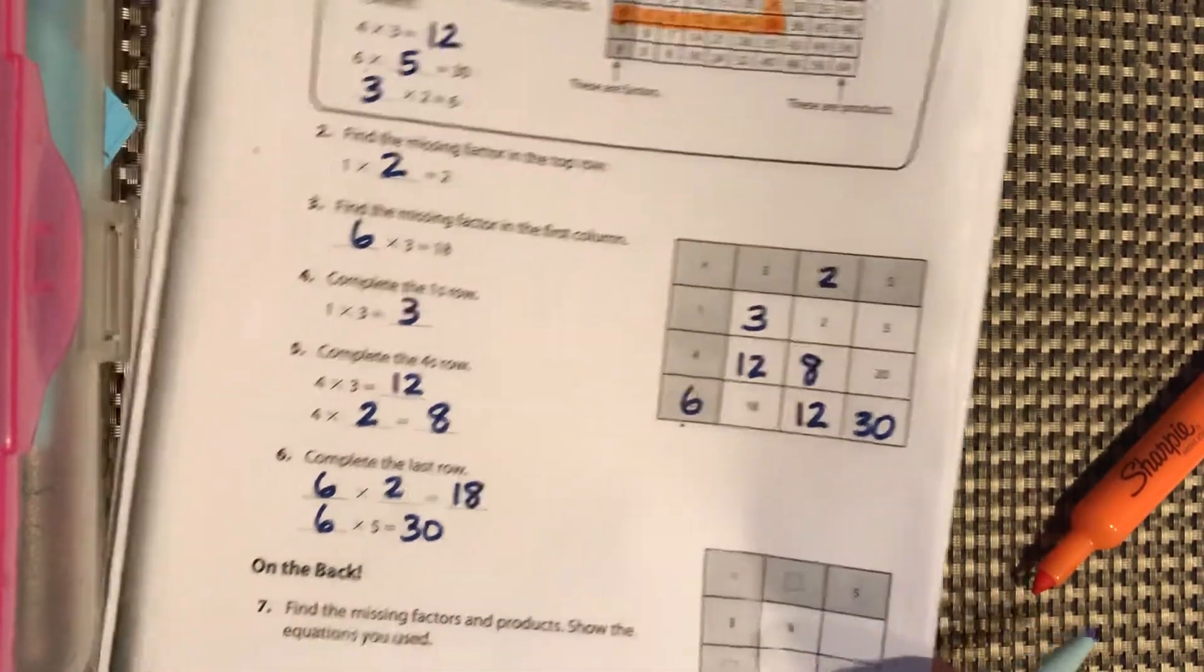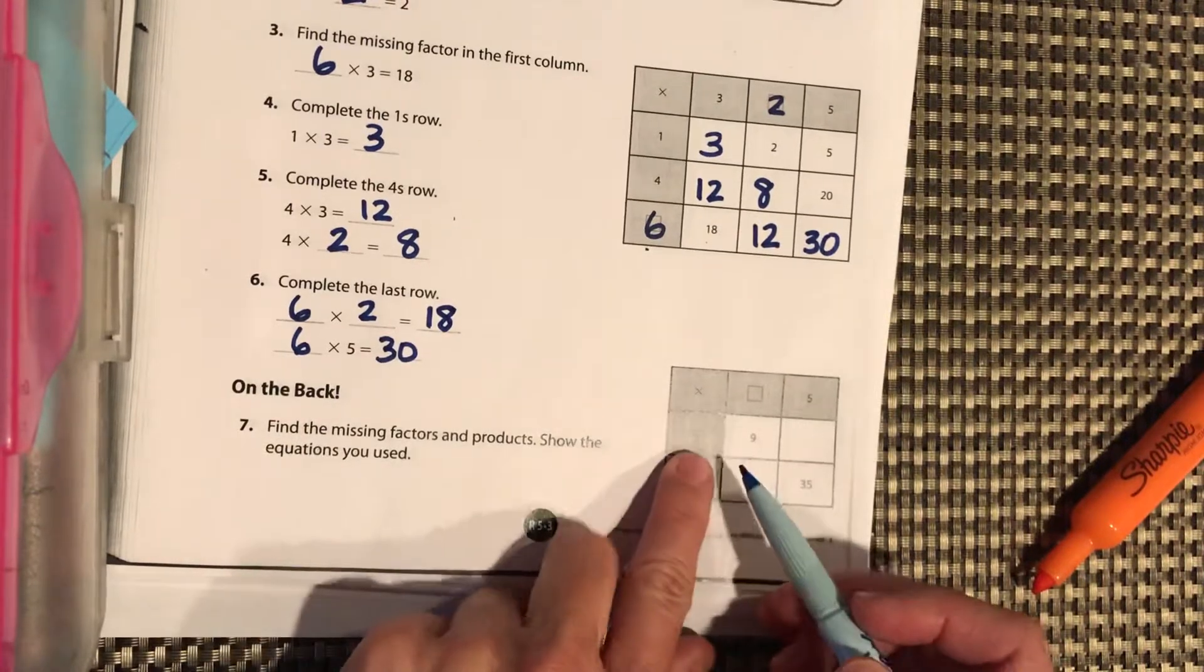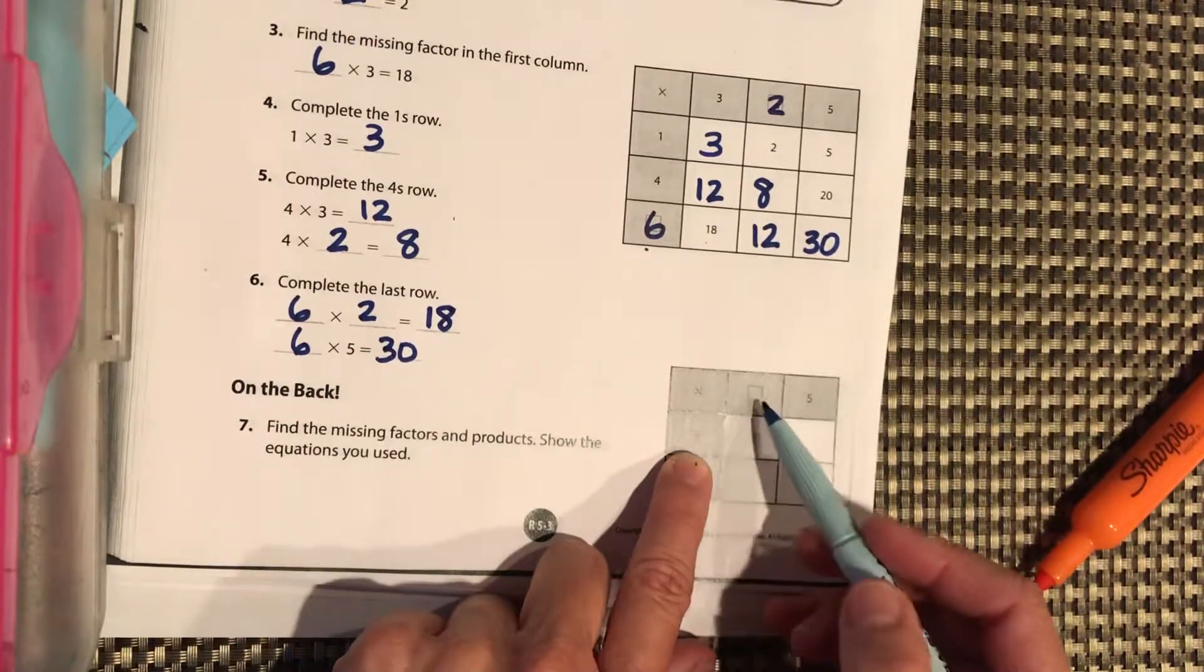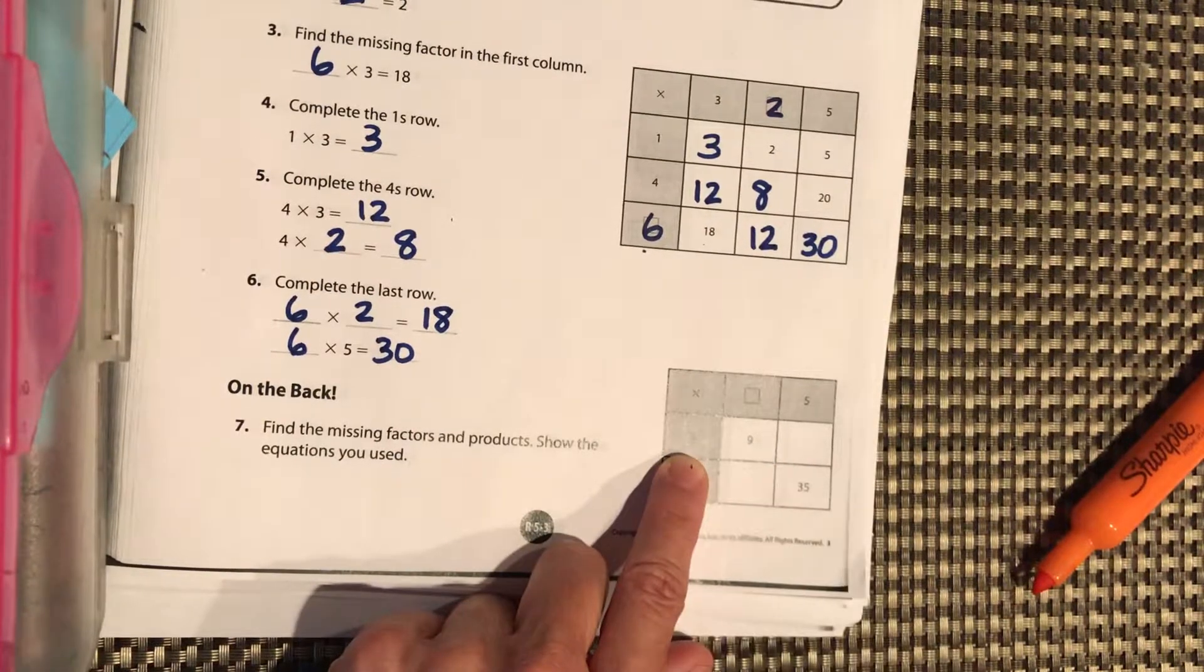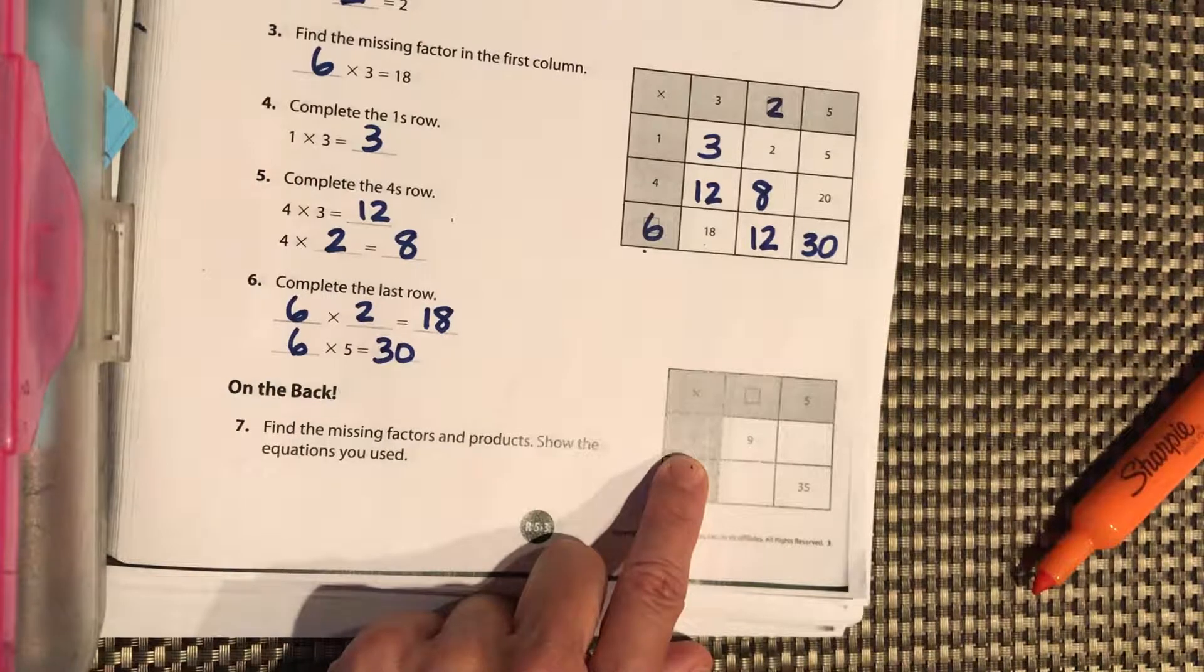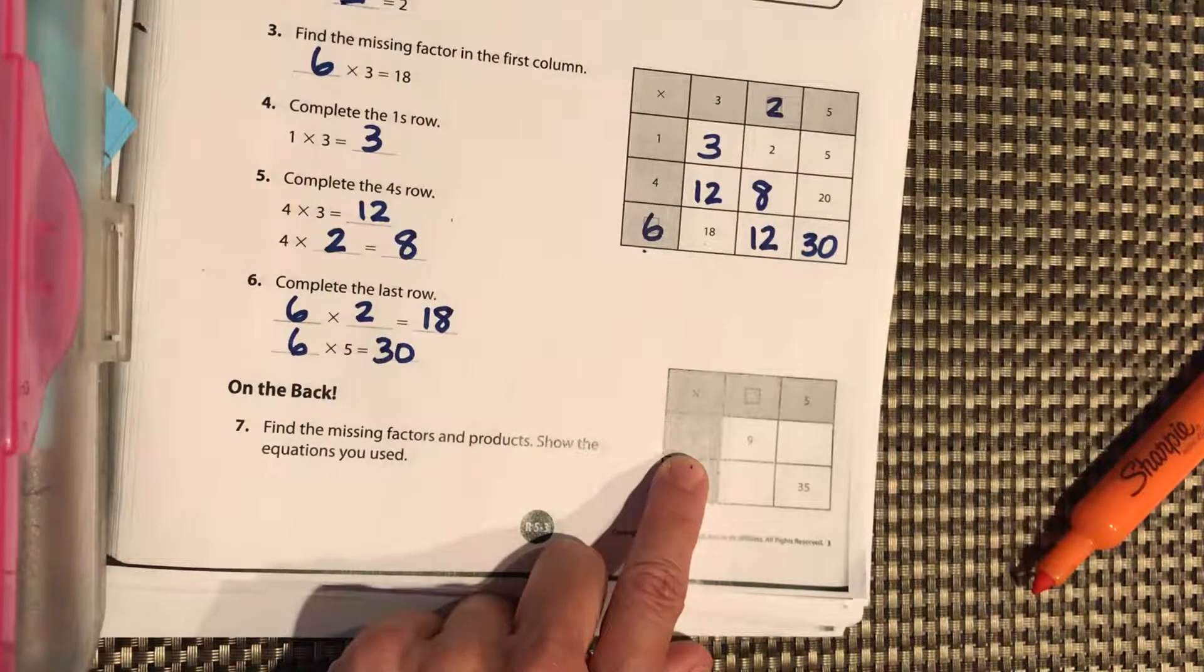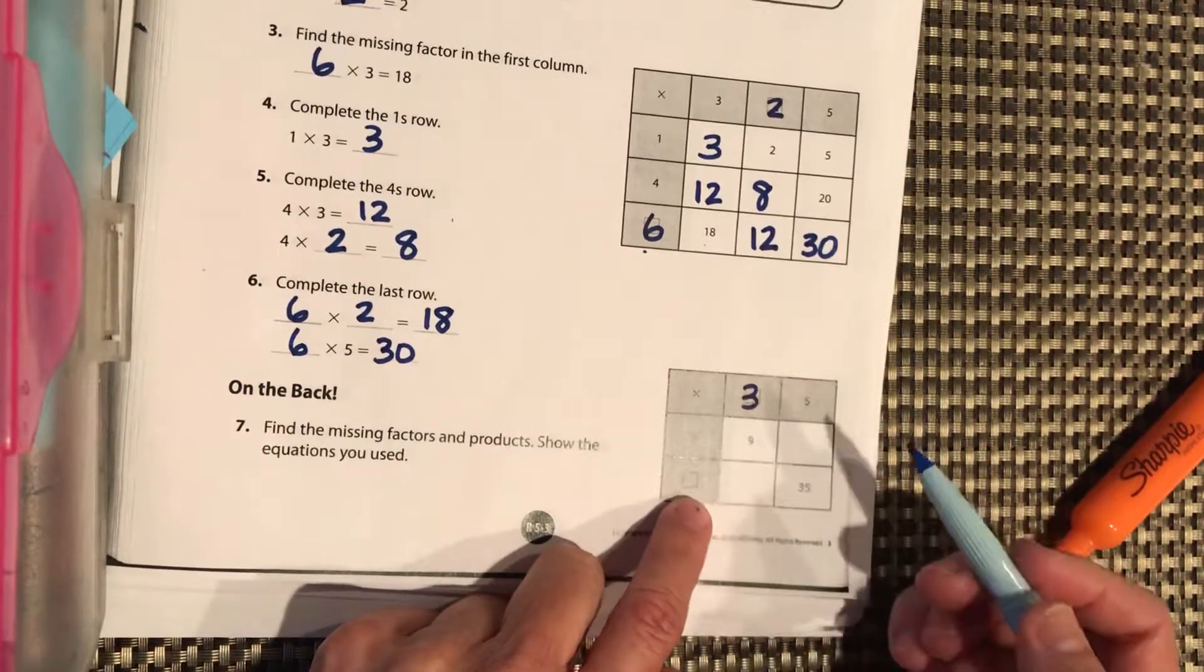Okay, I want you to try the one here on the bottom. So 3 times something equals 9. Ask yourself, 3 times what equals 9? You can pause it. It should be 3 times 3 equals 9.